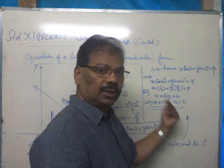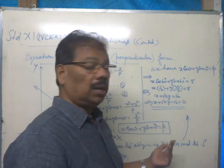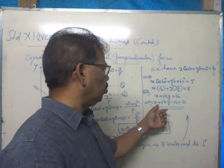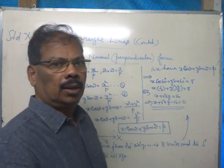Shifting this sixteen to the left side, to write it in the standard form, ax plus by plus c equals zero. That is, x plus root three y minus sixteen equals zero.